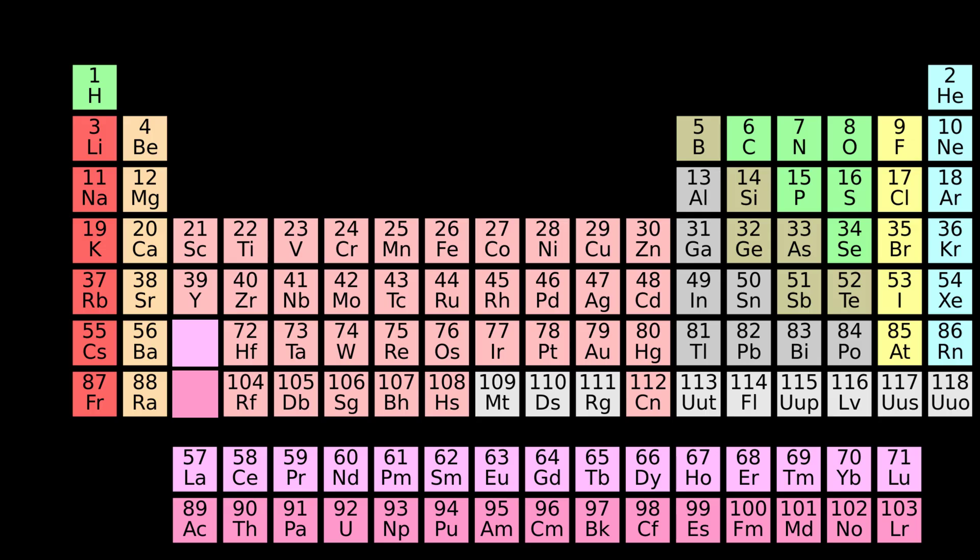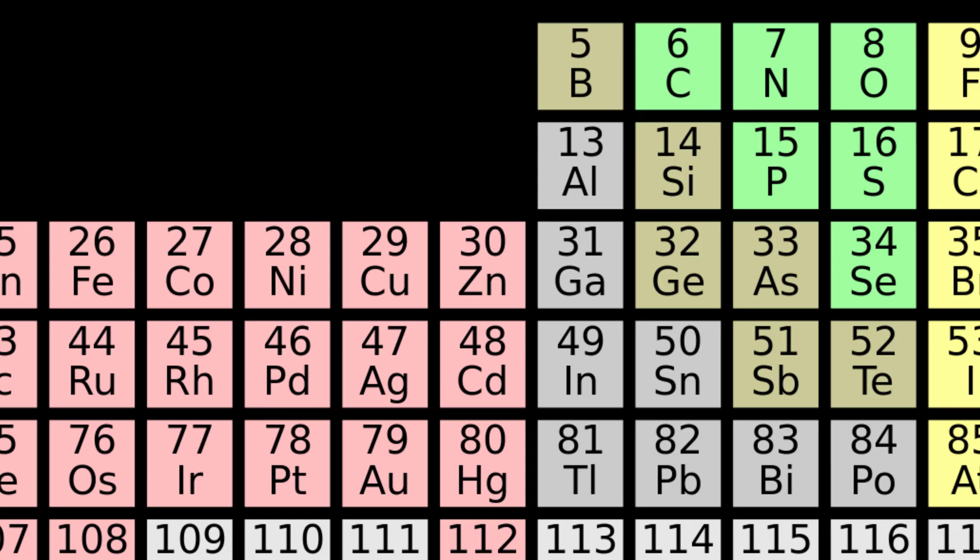Now again look at the periodic table and see the elements present in the column in which carbon is present. All the elements of this column have 4 electrons in the valence shell. Hence, they try to acquire 4 more electrons to become stable to get a total of 8 electrons in the outermost shell.